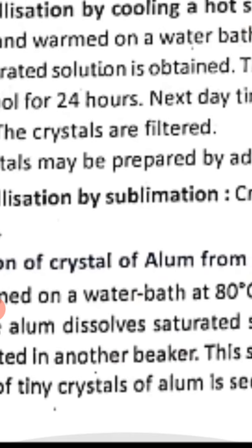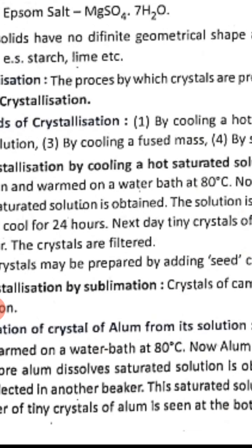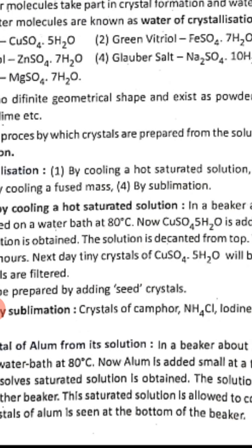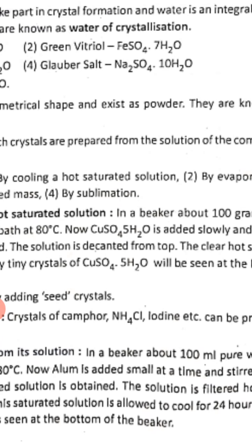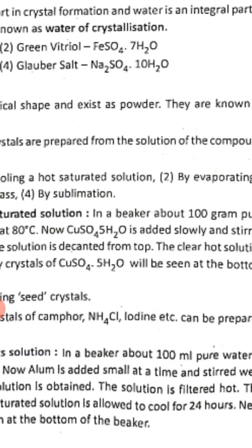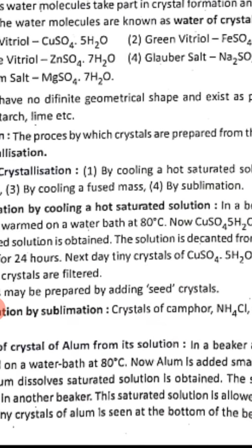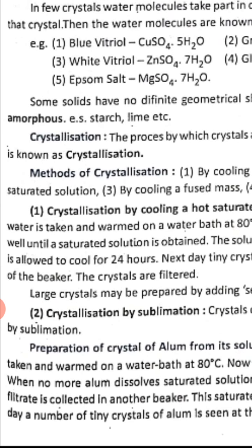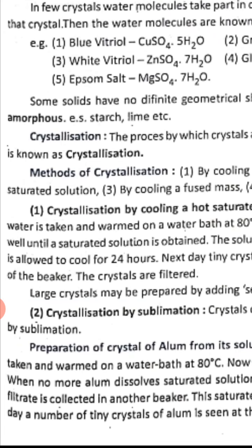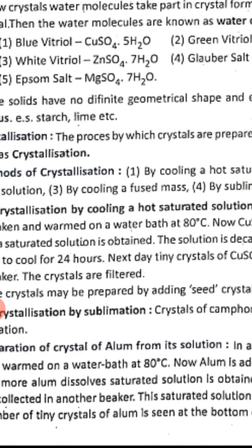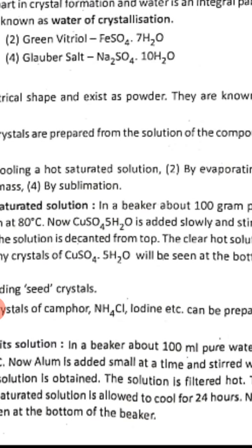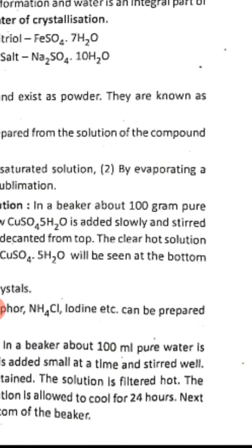Preparation of crystals of alum from its solution: In a beaker, about 1000 mL of pure water is taken and warmed on a water bath at 80°C. Alum is added a small amount at a time and stirred well. When no more alum dissolves, a saturated solution is obtained. The solution is then filtered hot.